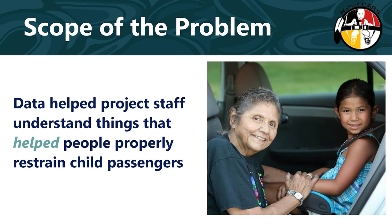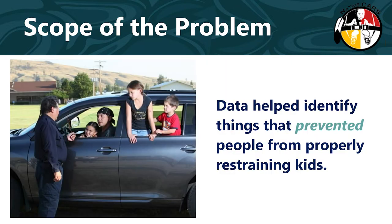The data helped project staff understand things that helped people properly restrain child passengers, like driving younger children, being the parent or guardian of the kids in the car, and driving in an area with a seatbelt law. The data also identified things that prevented people from properly restraining kids, like driving close to home, picking kids up unexpectedly, or believing a child was too big for a child safety seat when they were actually too small for a regular seatbelt to fit well.